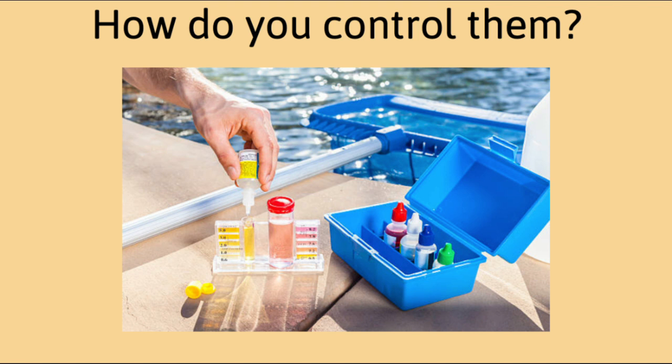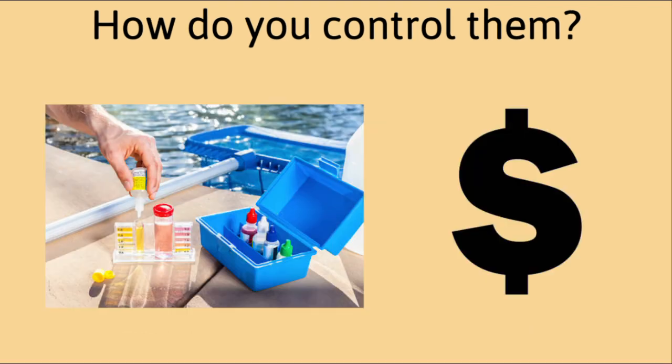So if phosphates are everywhere, how do you control them? That's easy. If you follow the PhD's guidelines for balancing your water, routinely shocking your pool, and keeping the chlorine levels between one and three parts per million, you'll be in good shape. Phosphate removers can be expensive, so watch our videos on water chemistry to keep your pool healthy all summer long.